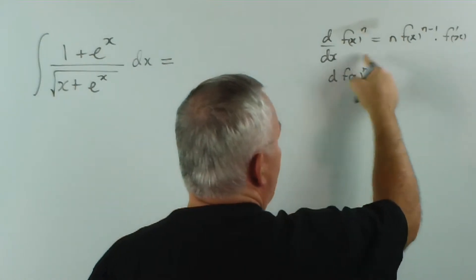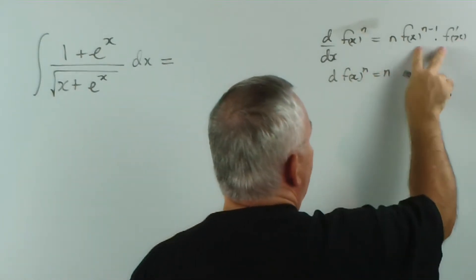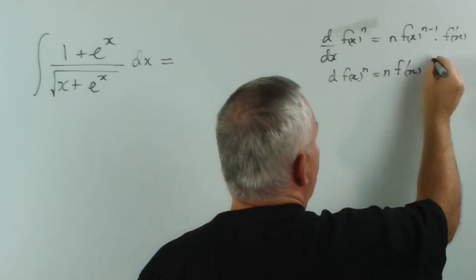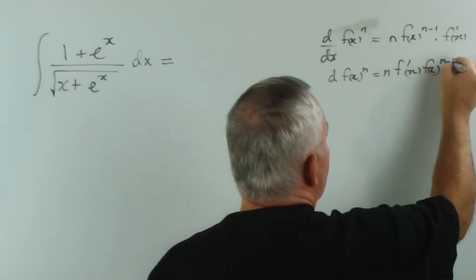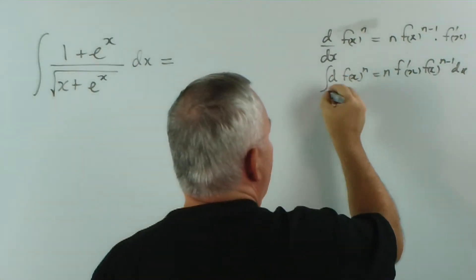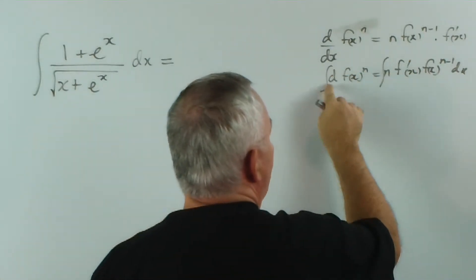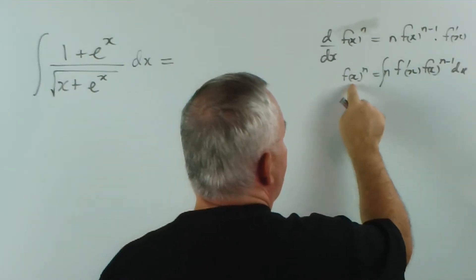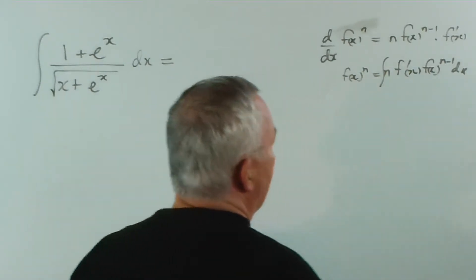And if we move the dx up here, we get f dash x f x to the n minus 1 dx. And if we integrate, the integral of the derivative undo each other, and this is the solution we get. That's the pattern we're after.